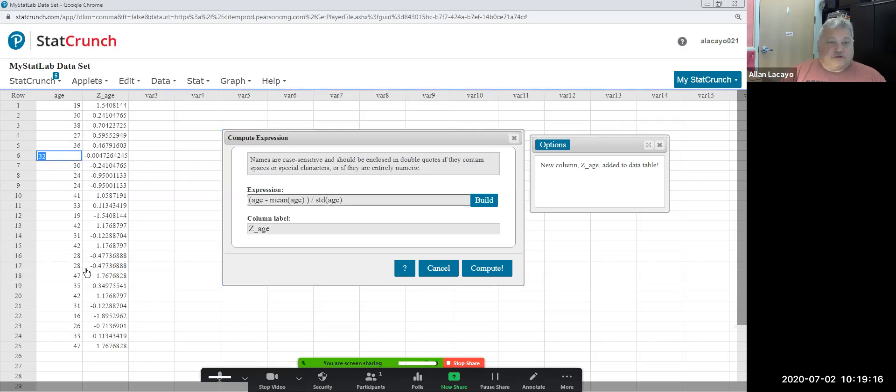Notice how a 32-year-old has a z-score that is near zero. Why? Because a 32-year-old is roughly the average age of people. And numbers close to 32 below it will have negative z-scores. Numbers close to 32 and above it will have positive z-scores.